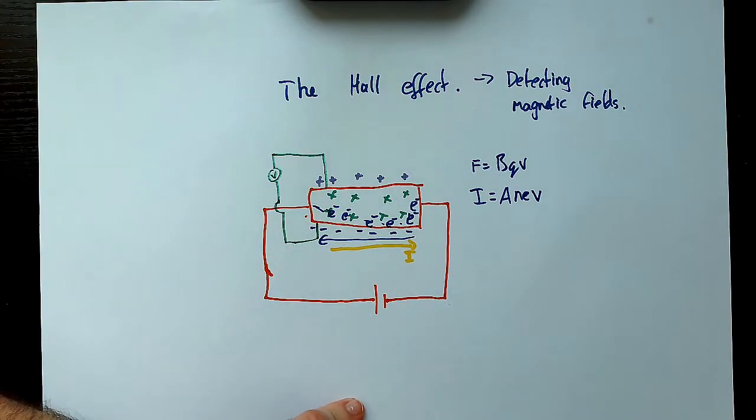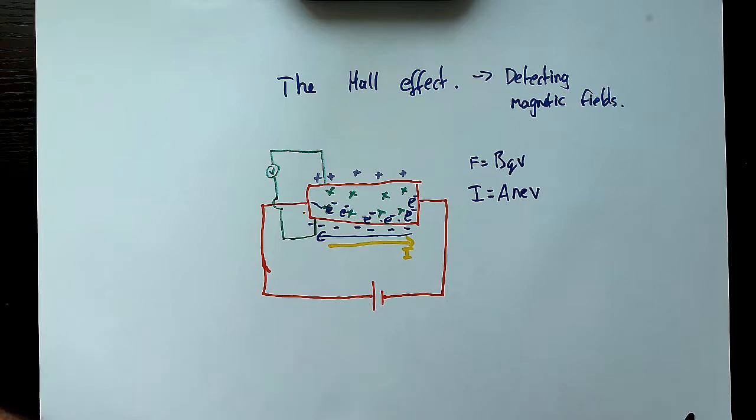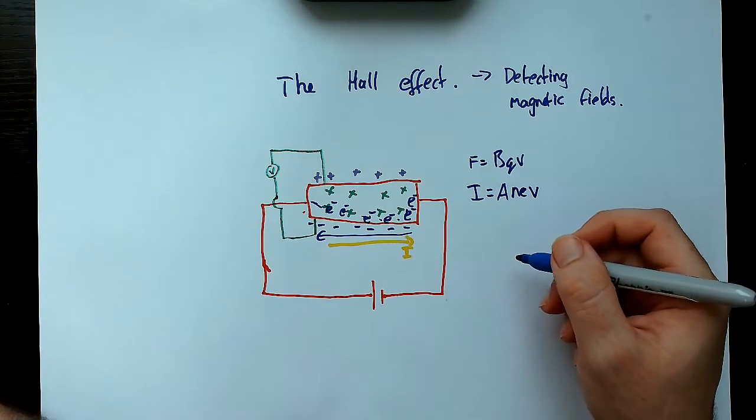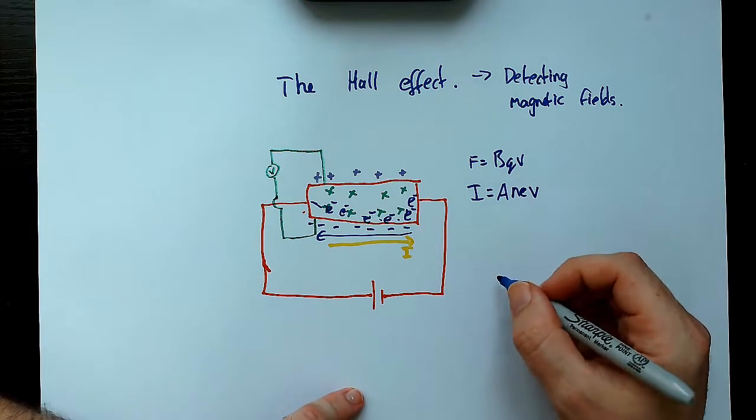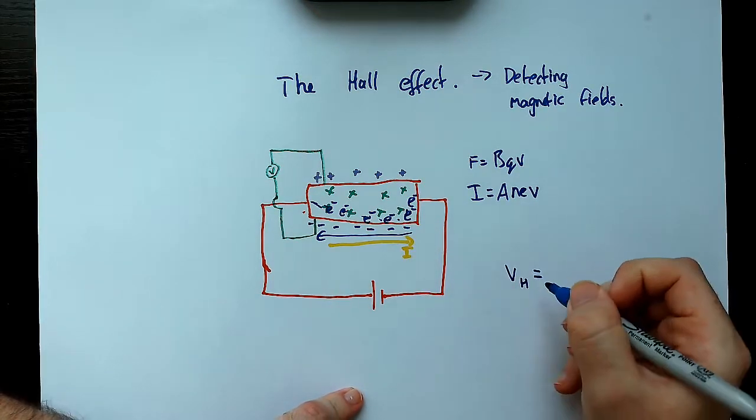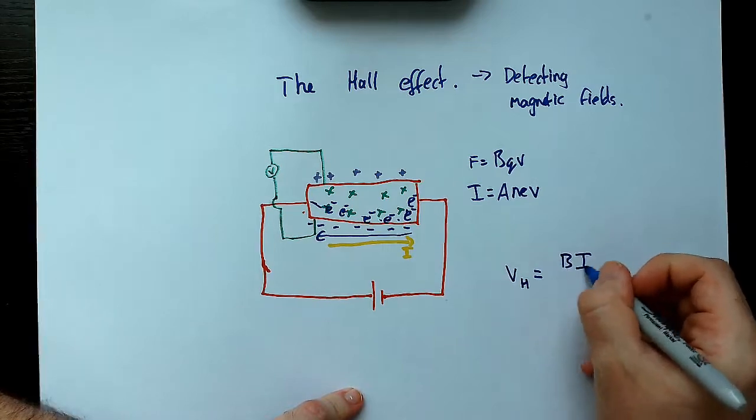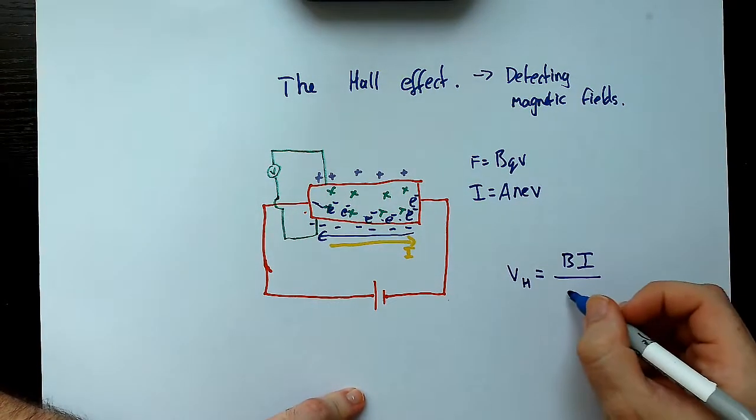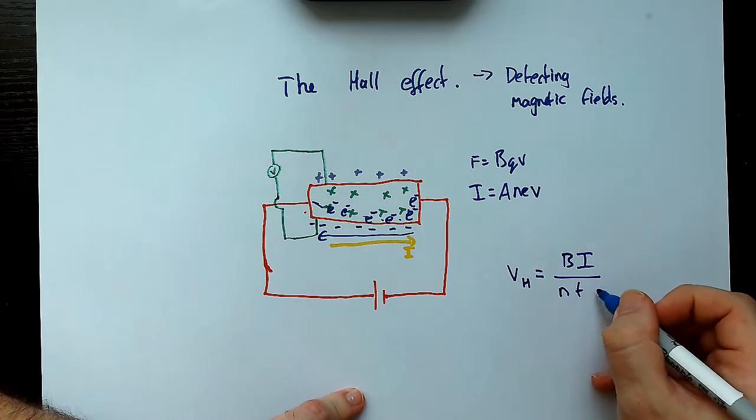And you can look in your book as well for a derivation. We're just getting straight to it. We're going to have... Let's have a look at what this actual equation is. So the Hall voltage is calculated as B times I over NTQ.